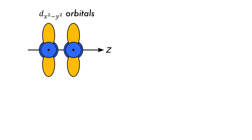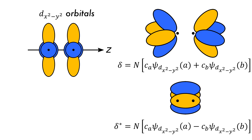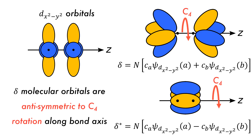When atomic orbitals meet side to side, as the dx²−y² and dxy atomic orbitals do when they combine, they form delta bonding and delta antibonding molecular orbitals. Delta orbitals change sign on a C4 rotation around the bond axis.